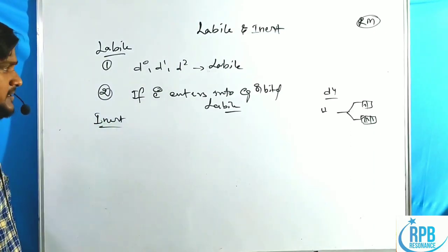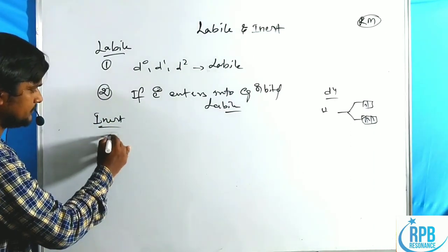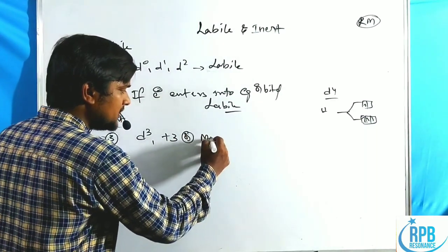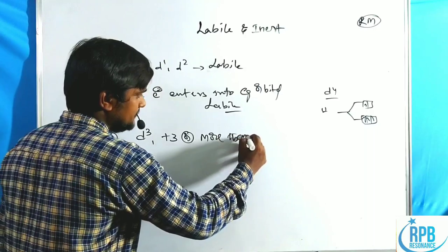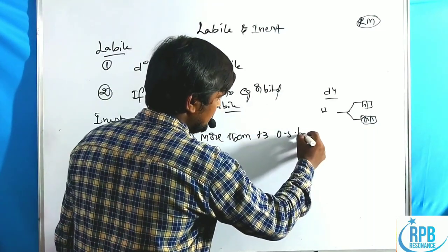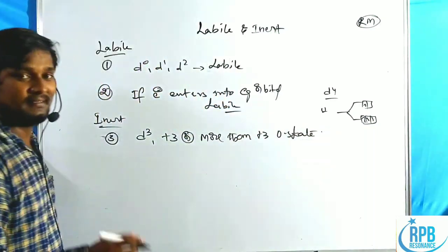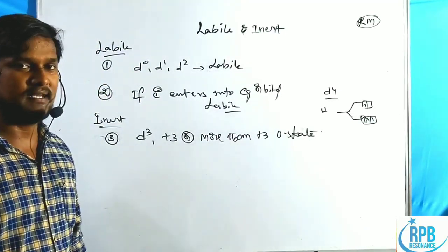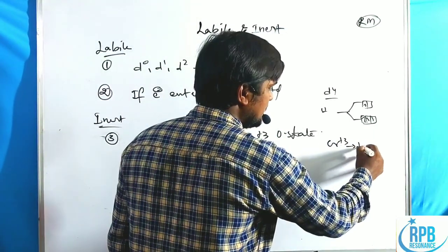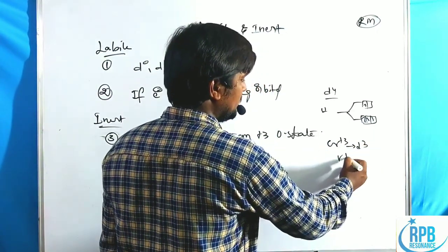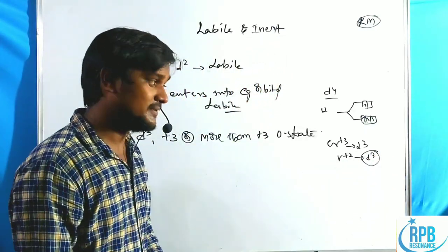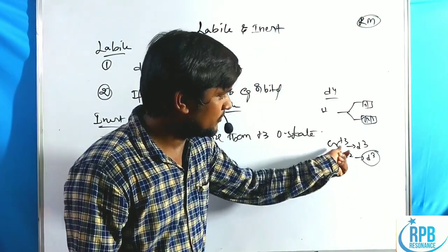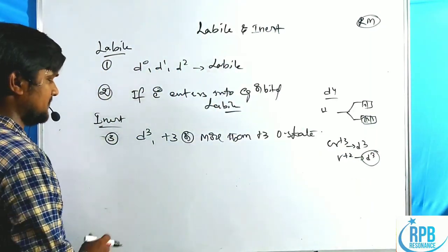Here also two points regarding inert complexes. Third point: D3 configuration with +3 or more than +3 oxidation state, then it is inert — such as chromium +3, which has D3 configuration, or vanadium +2 with D3 configuration. But vanadium +2 is less than +3, that is why it is labile. In the case of chromium +3, it is D3 configuration and it is an inert complex.